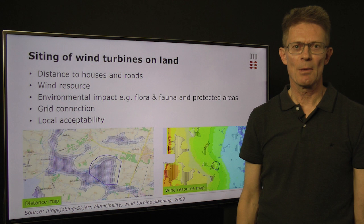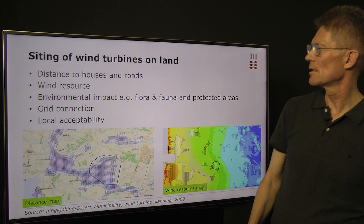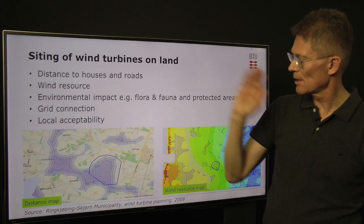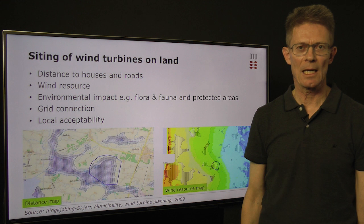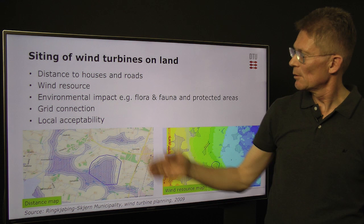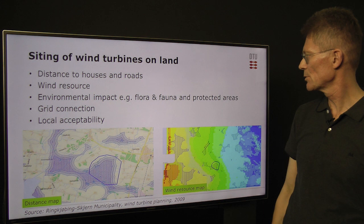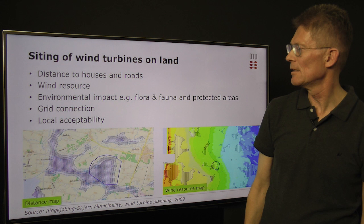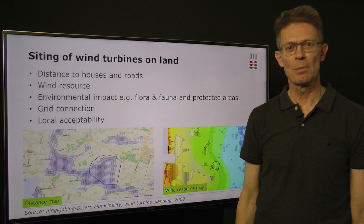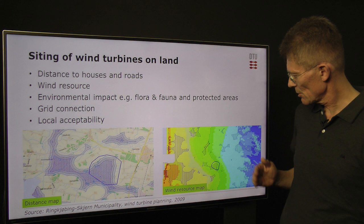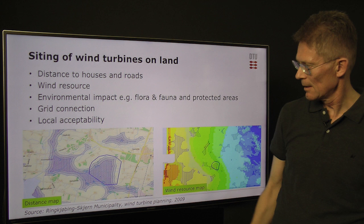When we do siting of wind turbines on land, there are a number of issues to consider. The distance to houses and roads is very important — in Denmark the nearest house must be at least four times the total height of the wind turbine. The wind resource is also important, as that is the fuel of our wind farm. Environmental impact — for instance, impact on flora and fauna — must be considered, and we also need to respect protected areas. The distance to the nearest grid connection is really important, and finally, local acceptability by the people living there is also of great importance.